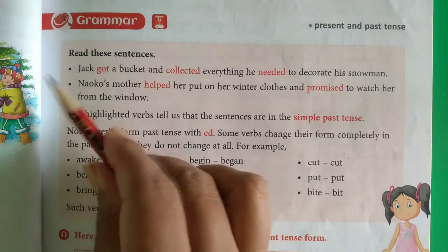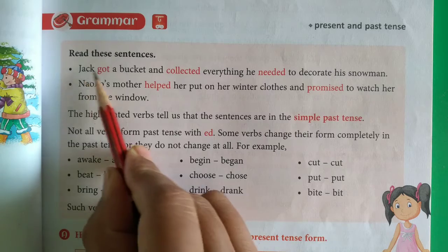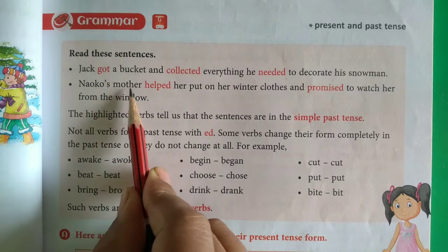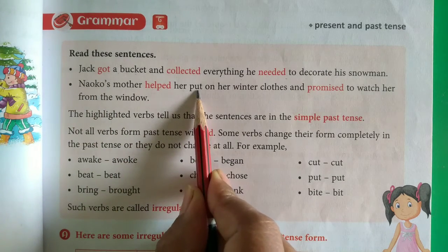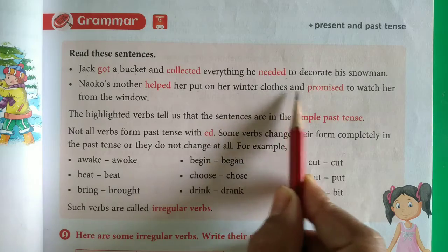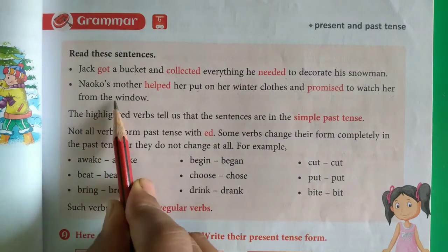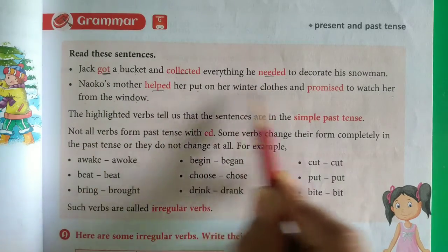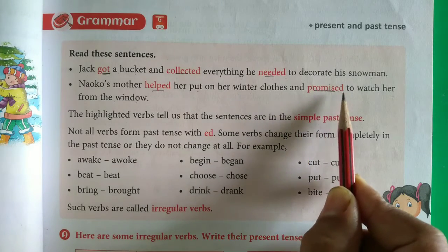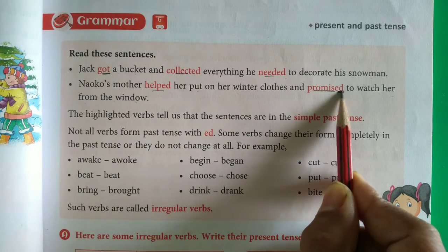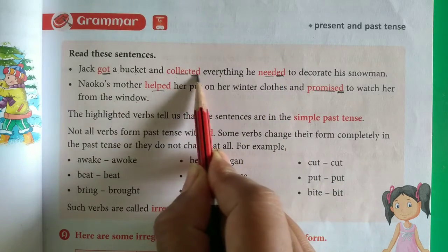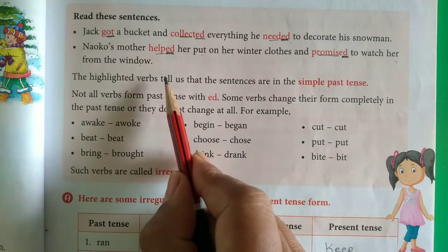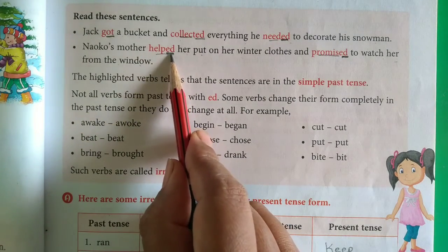Read these sentences. Jack got a bucket and collected everything he needed to decorate his snowman. Nako's mother helped her put on her winter clothes and promised to watch her from the window. Now see these words written in red color to highlight them — they are the past tense. Past tense means the action which has already took place. जो बात हो चुकी है, उसको जब हमें बात करनी है, तो हम लोग past tense use करते हैं.